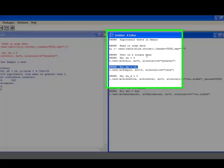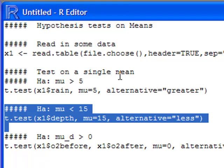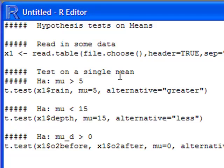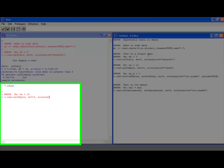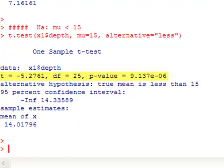All right, so let's do one with less than, and that's what the next one does. And it's looking at the depth of a stream at a specific site. I wanted to know whether or not the mean depth is less than 15. And notice that it says mu is equal to 15 and the alternative this time is less. So I submit this, and again I'm interested in the second line and the third line. Notice the t is minus 5.2761, the degrees of freedom are 25, and the p value is very small again. If you don't know how to read scientific notation, you should go back and learn how to read that. And notice it says alternative hypothesis: true mean is less than 15.